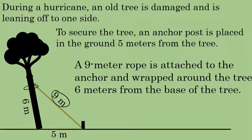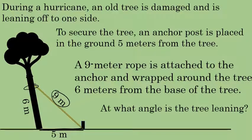Knowing those three values - the distance that the anchor post is from the tree, the length of the rope, and how far up the tree the rope is wrapped around - we can determine at what angle the tree is leaning, angle theta in this diagram.